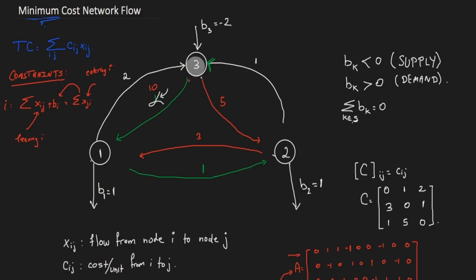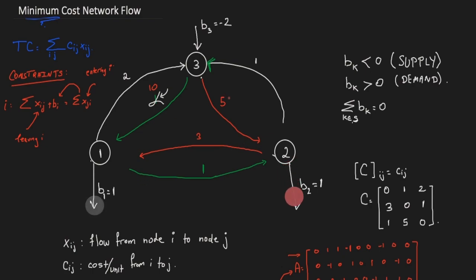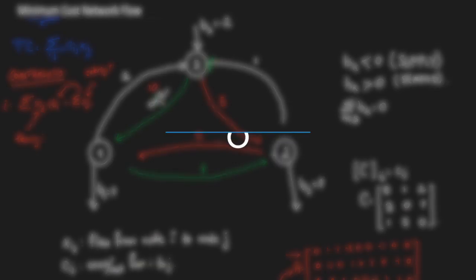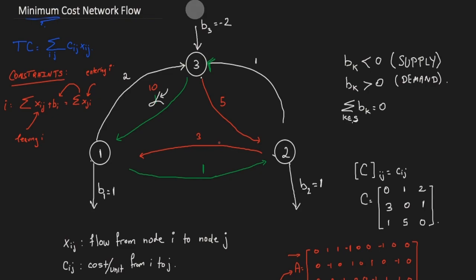Checking other candidate paths: pushing one unit through one path and one through another costs 15, and pushing both through the original route and then one unit elsewhere costs 21. So the solution via node two with total cost 13 is indeed optimal. I hope you enjoyed this lecture — if you found it beneficial, please leave a thumbs up, consider subscribing, and leave any questions or optimization problems you'd like explained in the comments below.